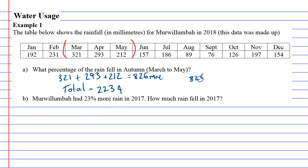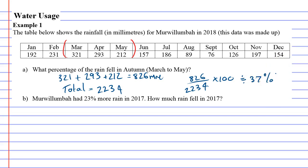When calculating a percentage, you take the amount over the total as a fraction, then multiply by 100. So: 826 divided by 2234, times 100, gives approximately 37%. That's Question A done — 37% of the rain fell in autumn.